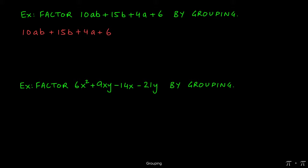We factor out the GCF of the first group and then the GCF of the second group. For 10ab and 15b, the GCF is 5b, the largest common factor. We factor it out and open parentheses. What goes inside? We divide each term by the GCF: 10ab ÷ 5b = 2a, and 15b ÷ 5b = 3.